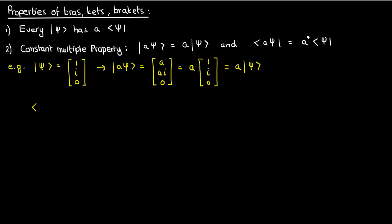Similarly, if we use the bra for this ket vector, then the bra form of the vector psi is just its conjugate transpose, which is 1, negative i, and 0.